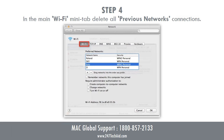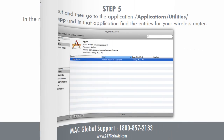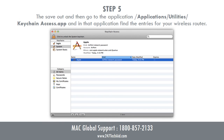Step 4: In the main Wi-Fi tab, delete all previous network connections. Step 5: Save out, then go to Applications, slash Utilities, slash Keychain Access.app, and in that application find the entries for your wireless router.